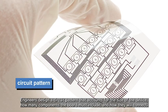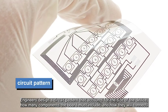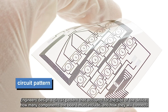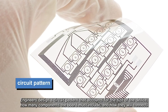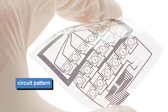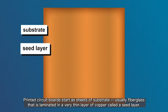Engineers design a circuit pattern that accounts for the size of the device, how many components the board must include, and how they will connect. Printed circuit boards start as sheets of substrate, usually fiberglass that is laminated in a very thin layer of copper called a seed layer.